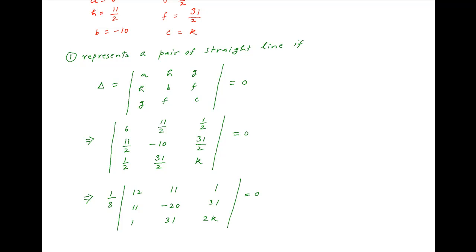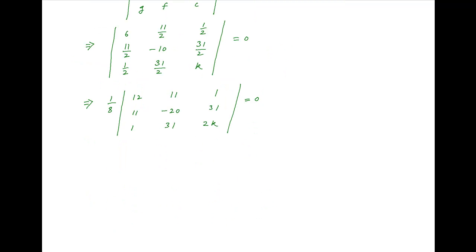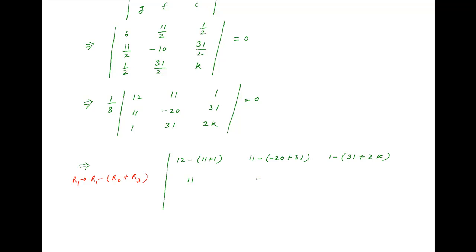The factor 1/8 cancels, and we apply a row operation to replace the first row with the difference between the first row and the sum of the second and third rows. Therefore, we get a determinant where the first row elements are (12 − (11+1)), (11 − (−20+31)), and (1 − (31+2k)), with the second and third rows remaining unchanged, and the value of this determinant equal to 0.